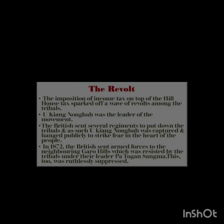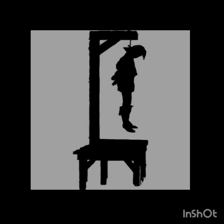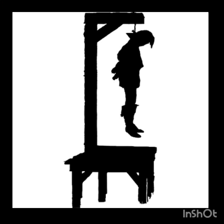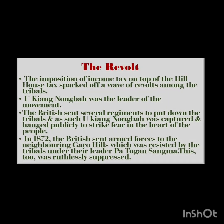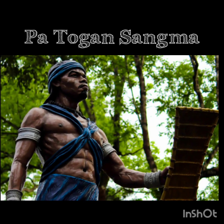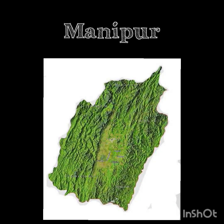This sparked off a wave of revolts among the tribals. The leader of the movement was U Kiang Nangbah. The British sent several regiments to put down the tribals, and Nangbah was captured and hanged publicly to strike terror in the hearts of the people. In 1872, the British sent armed forces to establish their rule in the Garo Hills. The tribal residents rose in rebellion under Patogan Sangma, but this too was ruthlessly put down.